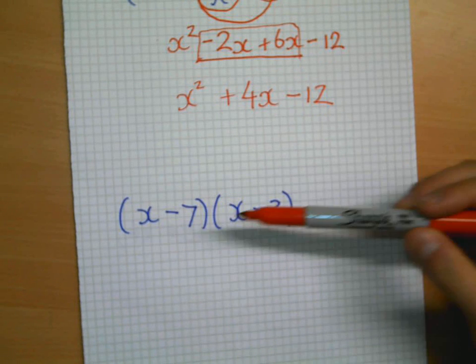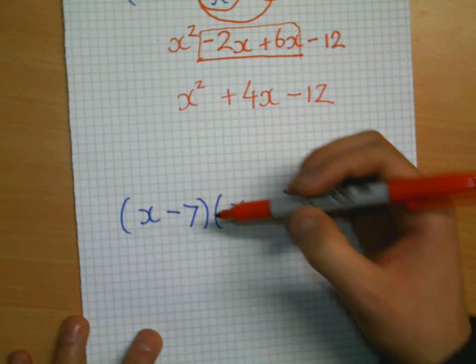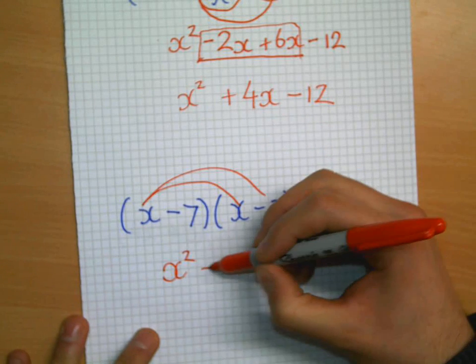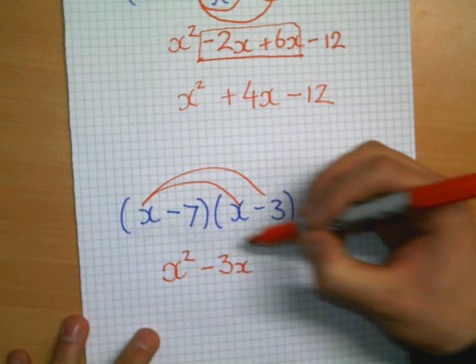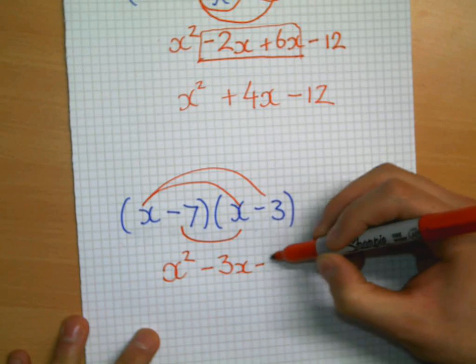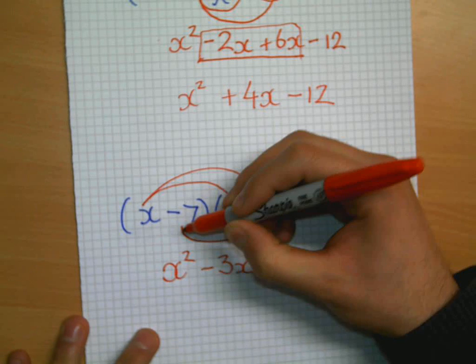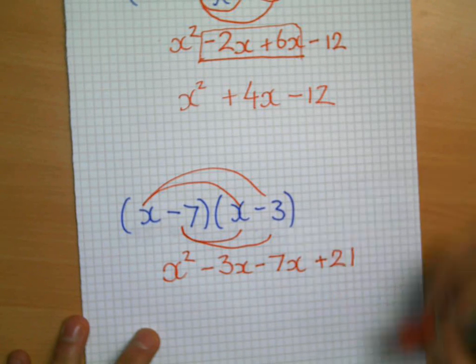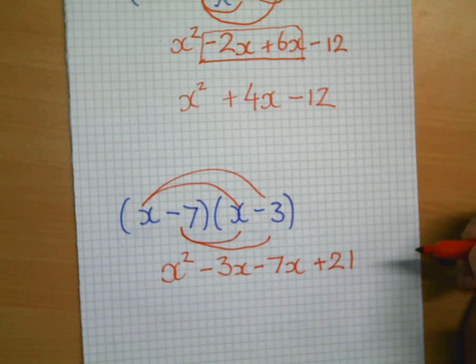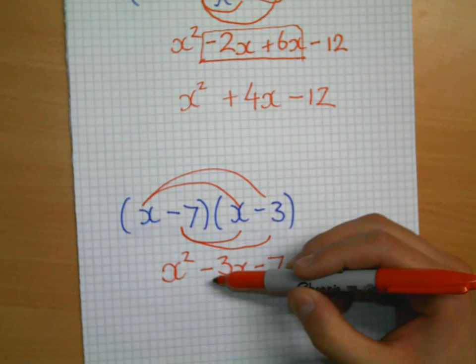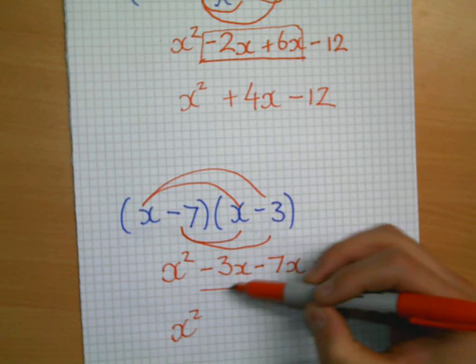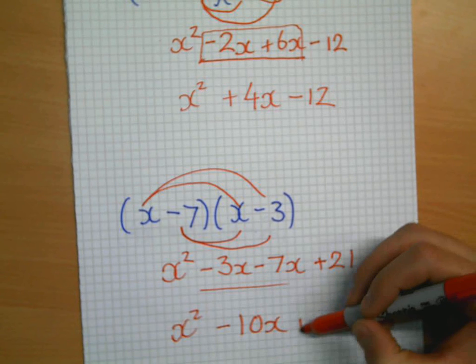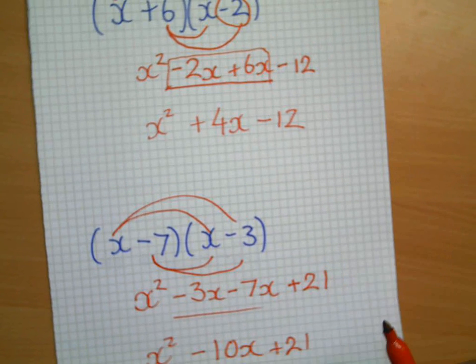Here, slightly more difficult. Again, we have two negatives. So, here, same process. x times by x, x squared. x times by minus 3, minus 3x. Minus 7 times by x is minus 7x. And minus 7 times by minus 3 will this time be positive 21. Because the negative times by negative will give me positive. Collecting the like terms. Here, x squared minus 3 take away 7. That's minus 10x plus 21.